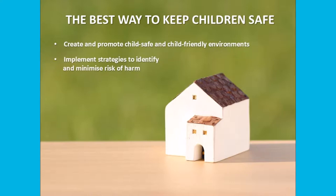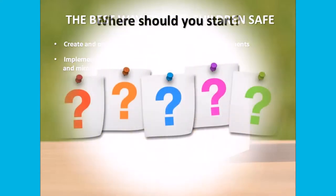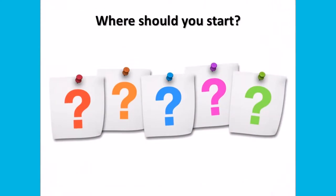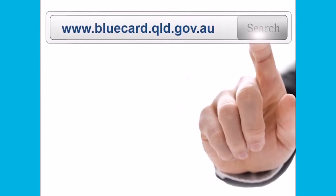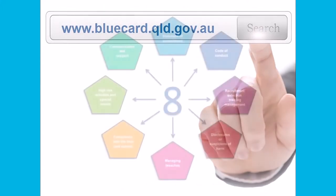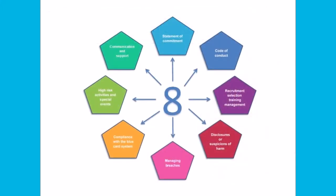If your organisation is required to develop and implement a child and youth risk management strategy, where should you start? We recommend that you watch the remainder of the risk management video series so that you can familiarise yourself with the eight requirements. Additionally, you should access the toolkit which is available on the risk management page of the Blue Card Services website. The toolkit provides more detailed information and guidance on the eight minimum requirements.